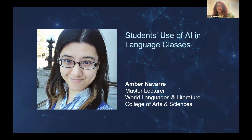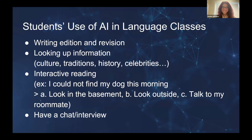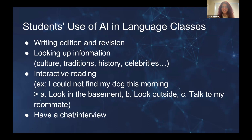Hello everyone, I'm Amber. I teach Chinese, so most of what I'll share is from my experience playing with AI tools in my Chinese classes. The range of student use of AI in language classes includes editing writing and revision, looking up cultural information, traditions, history, and celebrities. They also do interactive reading — for example, you can feed ChatGPT a scenario like 'I could not find my dog this morning' (in Chinese, in my class) and ChatGPT gives you several options and the story unfolds. They can also use it for chat and interview practice.